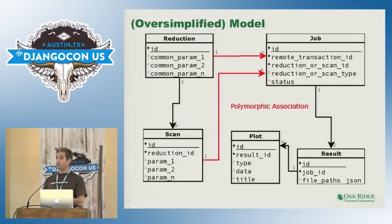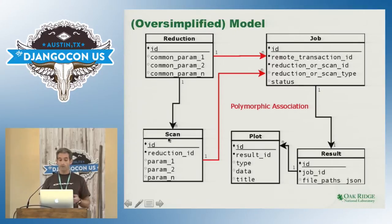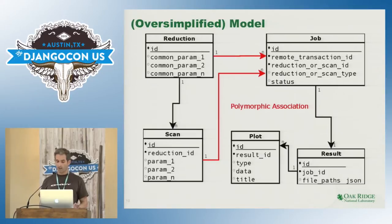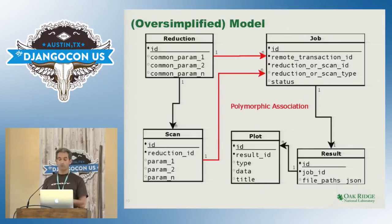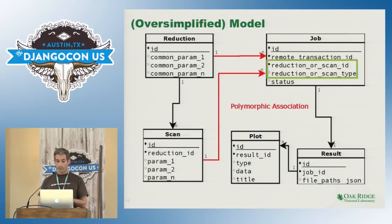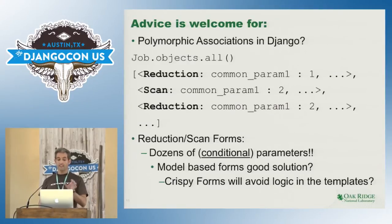I don't have much experience with Django and I have a lot of questions. I'm taking advantage of these five minutes to get responses from you. I have my reduction composed of several scans and a job where I submit either a reduction or several scans — a polymorphic association. I have no clue how to do this in Django. I need something where I get all my objects and the type associated with the reduction or the scan.